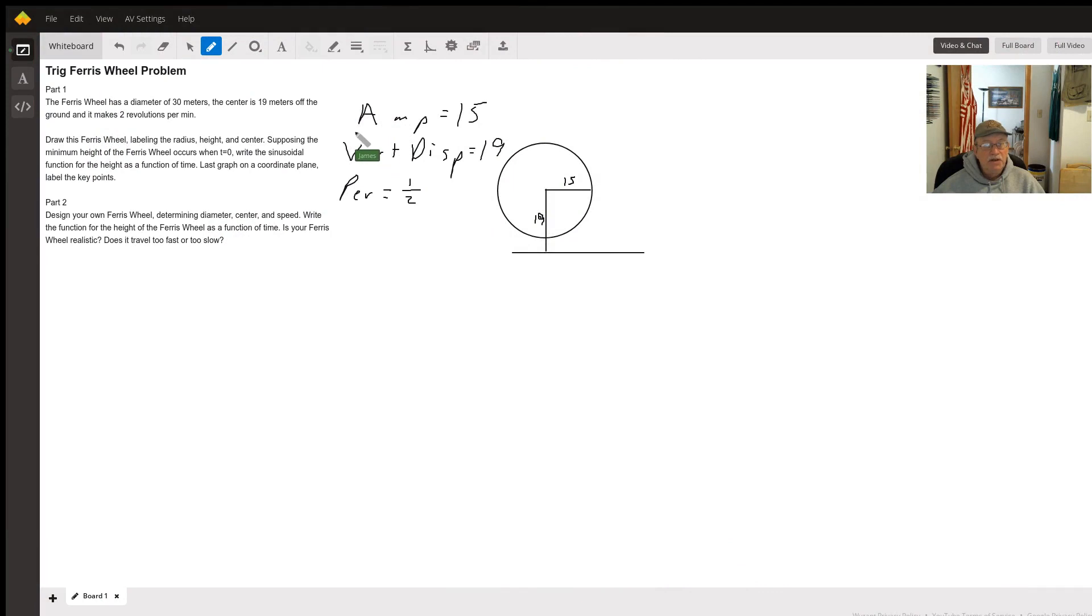Hello. So what we have here, if the diameter is 30 meters, that means our amplitude is going to be 15 meters, or the radius of the wheel.